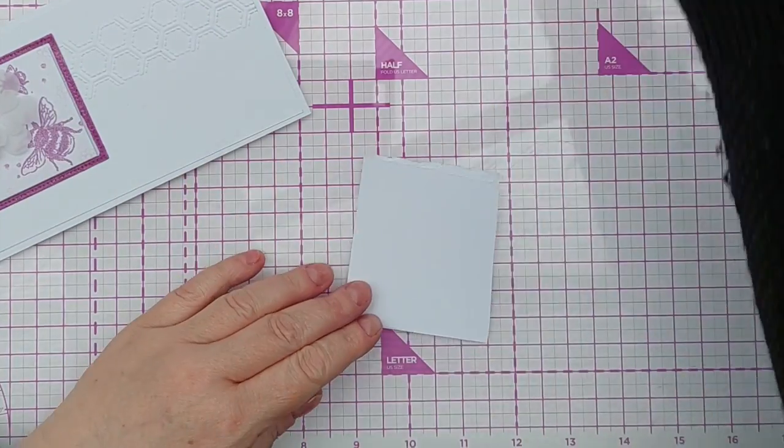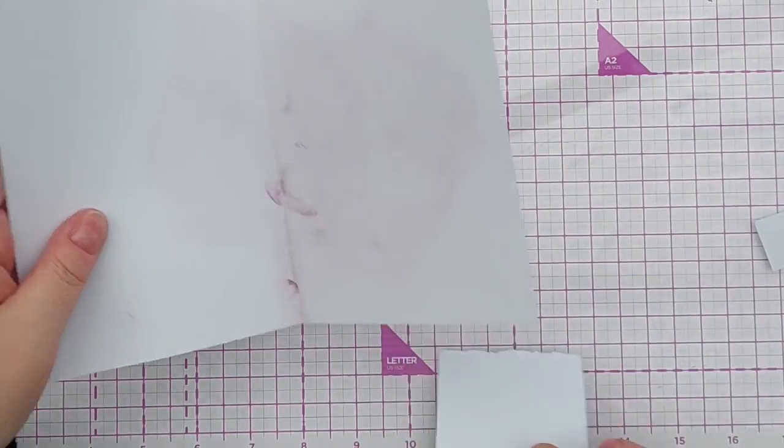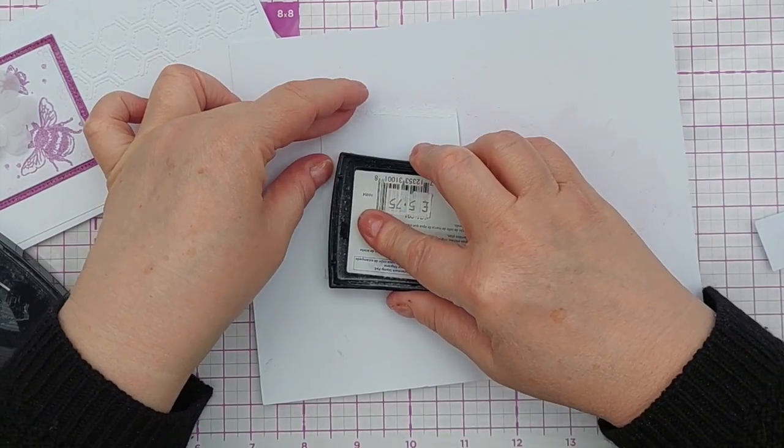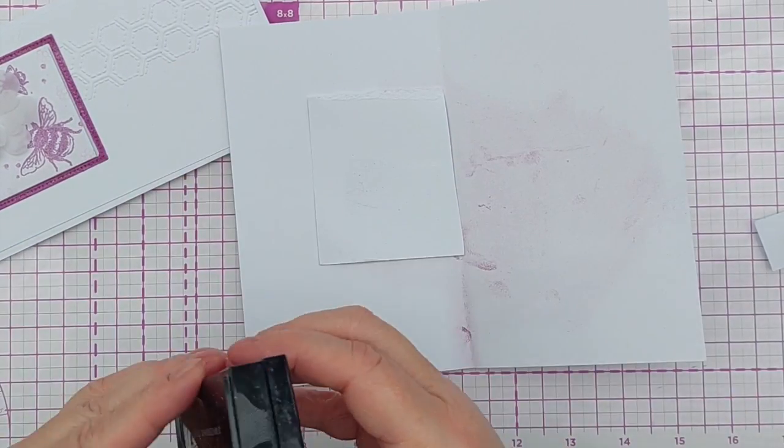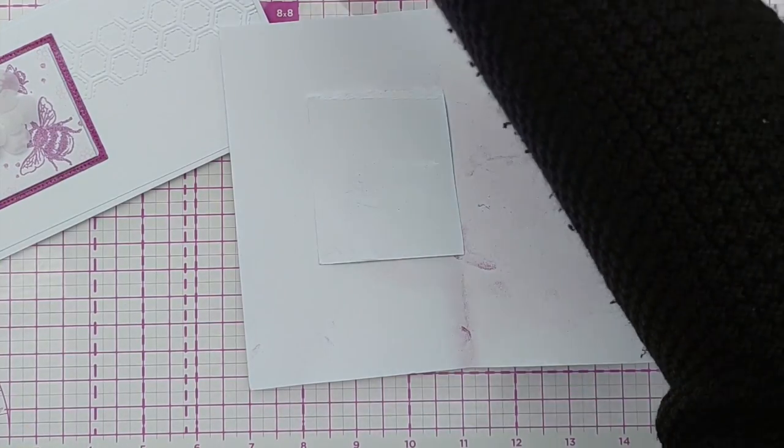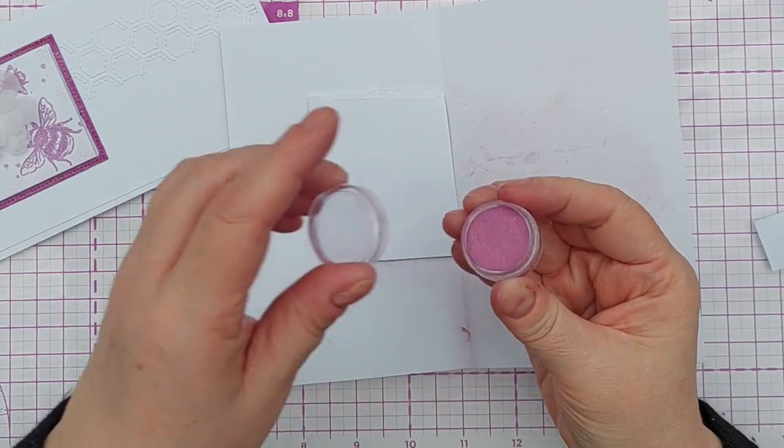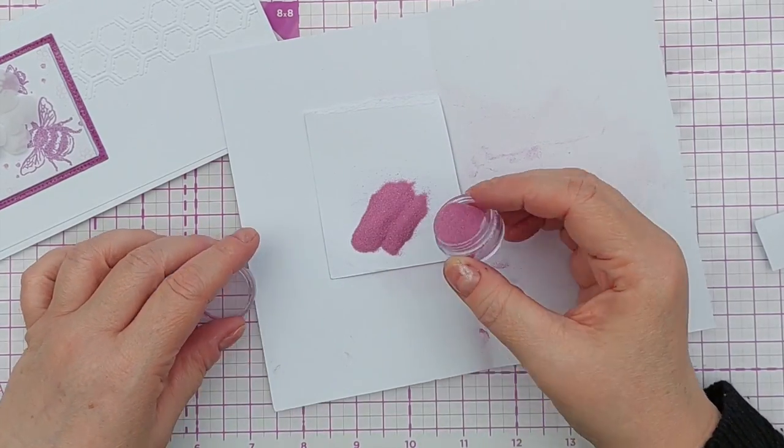What I want is a scrap of white cardstock. I'm going to put some embossing ink on it and get my raspberry jam embossing powder.